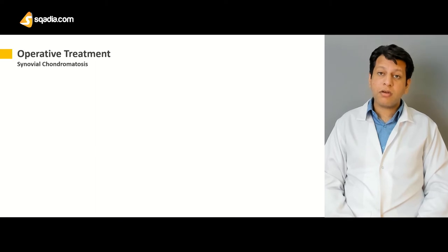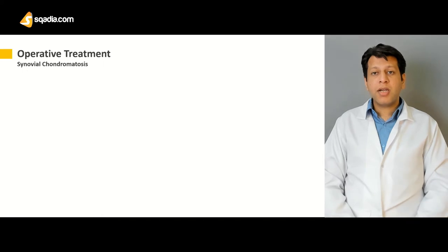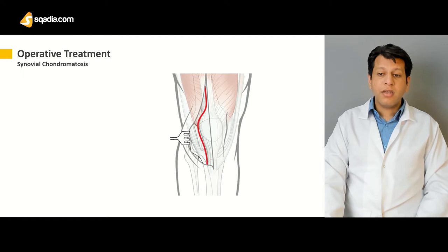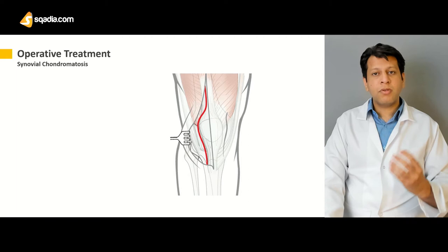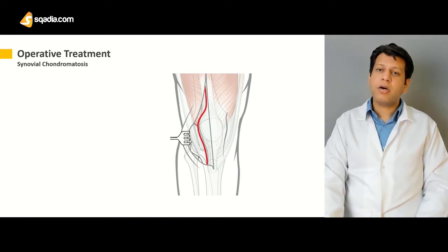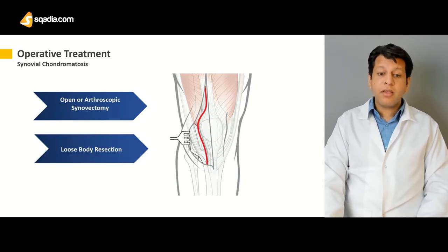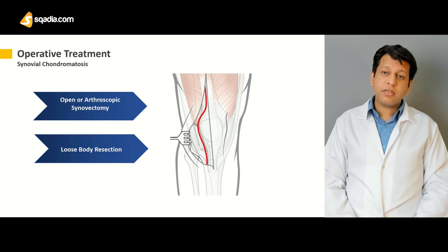Nowadays, with the new advent of technology, we have arthroscopes freely available, and arthroscopic synovectomy along with the removal of loose bodies is mostly the go-to choice or standard of treatment. But at times, due to constraints or other issues, if this is not available, we may have to go for some form of open procedure around the knee joint, manually removing all the loose bodies and performing a partial synovectomy of the synovium.